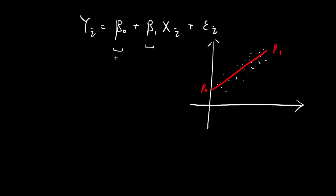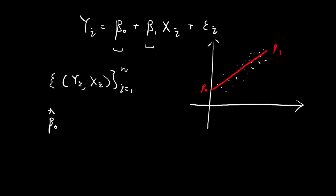What we want to do now is to estimate the values of beta0 and beta1 using the data that we already have — a set of n data points. We want to find a way to use these data points to estimate beta0 and beta1, and the estimates we obtain will be represented by the hat symbol. So the estimated value of beta0 will be beta0-hat, and the estimated value of beta1 will be beta1-hat. We use some function of the collected data to obtain these estimates.